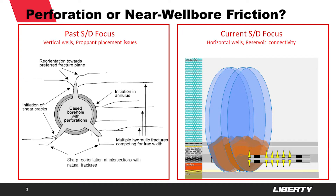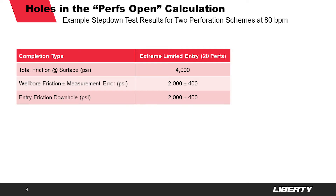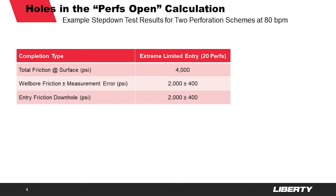It could be that we have two or maybe four active perforation clusters — that can make a big difference in the ultimate production of the well. I'm going through two example cases here, two perforation schemes where we pump a frack job at 80 barrels a minute.